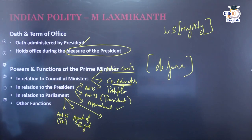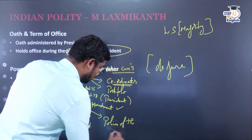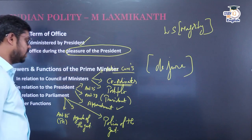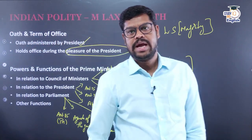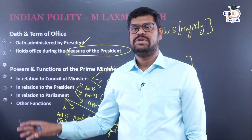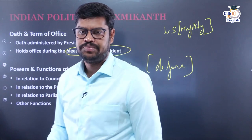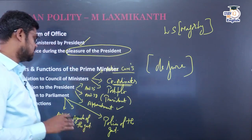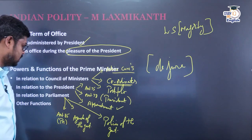It is the Prime Minister who announces the policies of the government on the floor of the house. The Prime Minister himself is the leader of the house in whichever house he is a member. These are the functions performed by the Prime Minister in relation to Parliament.